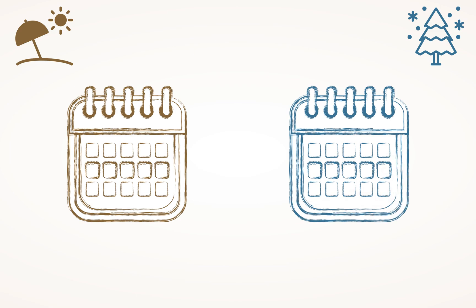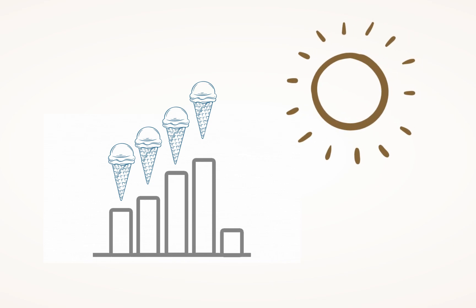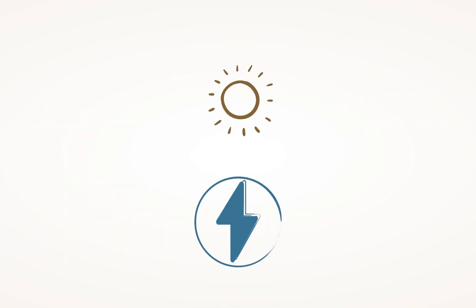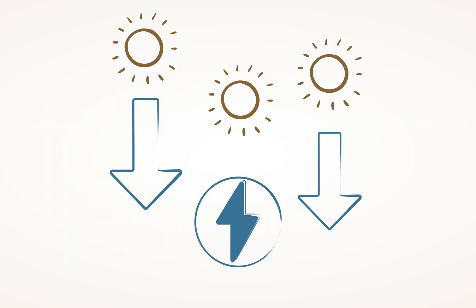Many things in the world tend to repeat regularly. For example, there are more sunny days in summer than winter. The sale of ice cream rises during hot days, or electricity consumption decreases during days with more extended daylight.